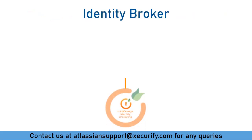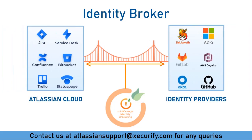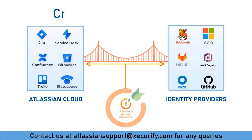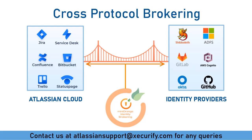Identity Brokering is a way to establish trust between parties who want to use online identities of one another. Minirange IDP supports cross-protocol brokering, which means we can configure Atlassian Cloud — which supports SAML protocol — with any identity providers that may support other SSO protocols like OAuth/OIDC, JWT, LDAP, etc. If SAML is supported by your identity provider, you can still use brokering to leverage the features of Minirange Identity Broker.